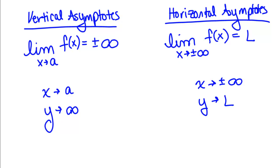So with a vertical asymptote, the equation you end up getting is an X equation, it's X equals A. But with the horizontal asymptote, the equation you end up getting is a Y equation, so you get Y equals L.